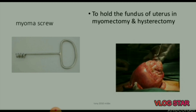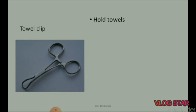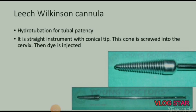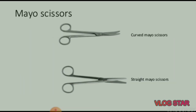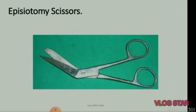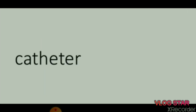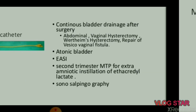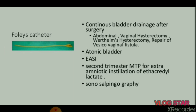Dissecting forceps (non-toothed) and myoma screw are used to hold the fundus of the uterus in myomectomy and hysterectomy. Towel clip is used to hold towels. Next instrument is Leech Wilkinson cannula, used for hydrotubation for tubal patency. It is a straight instrument with a conical tip. The cone is screwed into the cervix and then dye is injected.